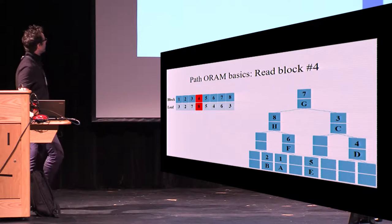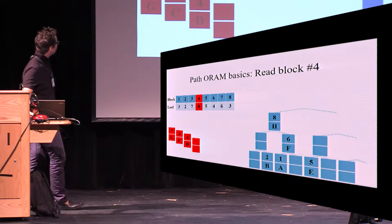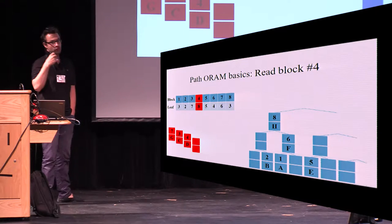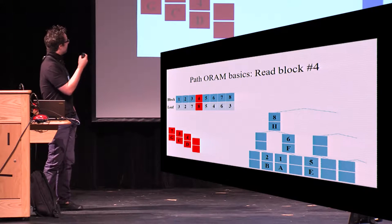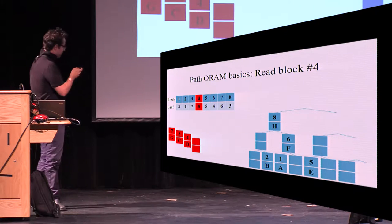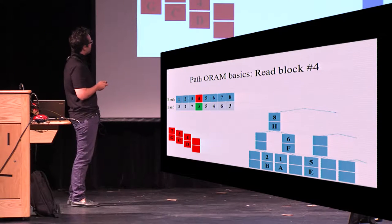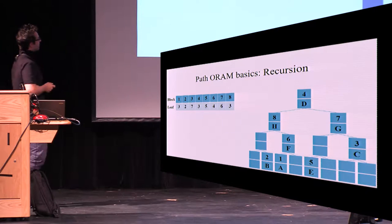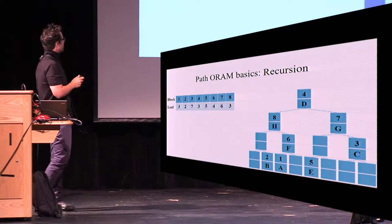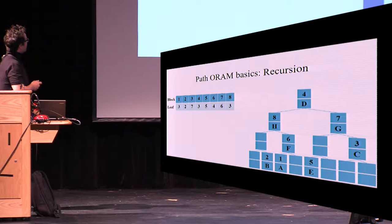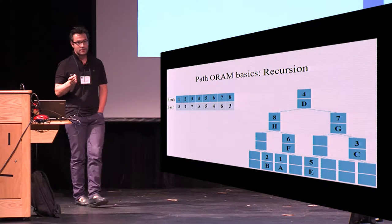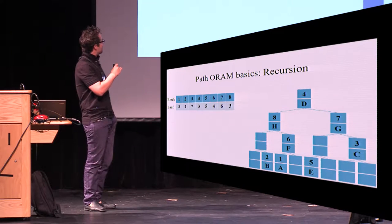If you want to read block four, you download this path, decrypt it locally, and read the information. When you write it back, you must change the position of block four — otherwise reading the same position again would break security. So you pick a new random leaf, assign block four to leaf three, and rewrite the path. Now block four sits near the root and can be accessed from leaf three. However, storing the position map requires linear space, so you have to run an ORAM on the position map itself.